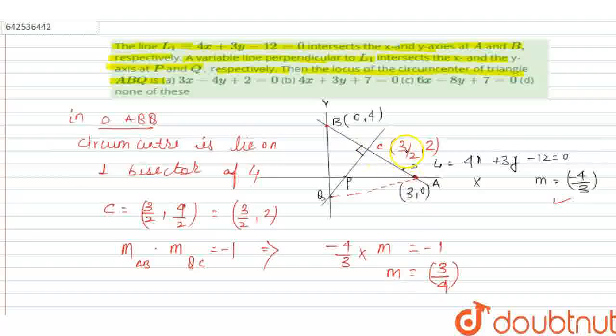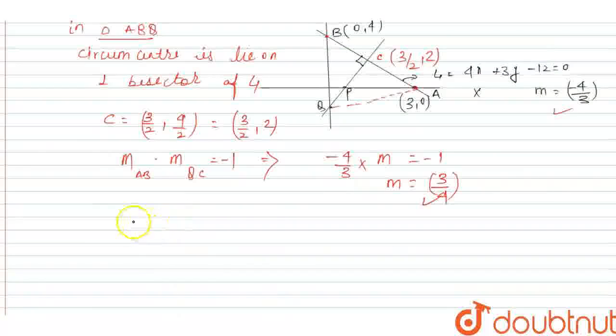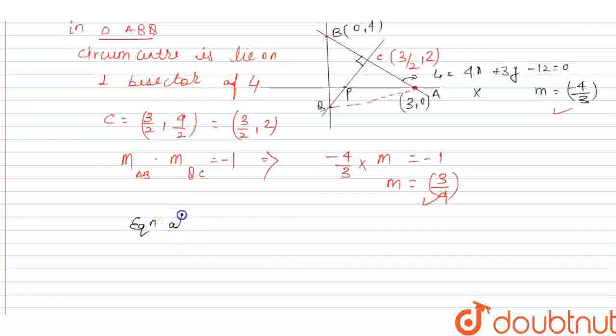Then we have the point C and we have the slope, then definitely we have to find the equation of the line QC. Then equation of line QC is Y minus 2 equals 3 by 4 into X minus 3 by 2.